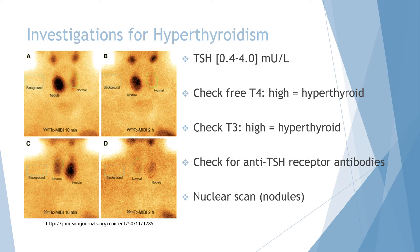Of course, you should also order free T4 and T3 to confirm any signs related to hyperthyroidism. If the patient has Graves' disease causing hyperthyroidism, they will have anti-TSH receptor antibodies that bind to the thyroid gland and continuously stimulate it. So a workup for those antibodies is important. A nuclear scan is also indicated to see if there is increased uptake of the radionuclide and to check for any nodules in the thyroid gland.